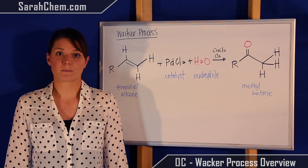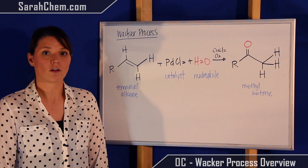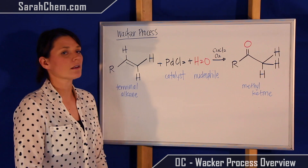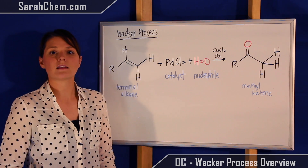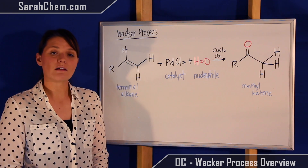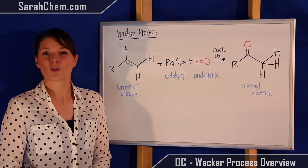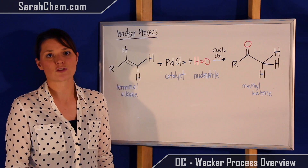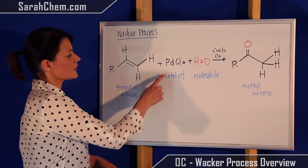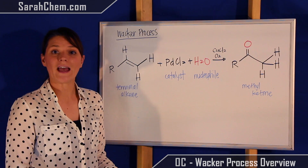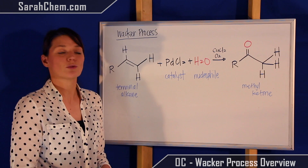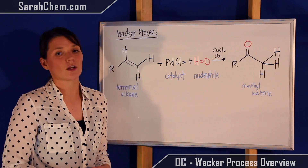First, let's take a look at what's involved in the Wacker process. Over here we have a terminal alkene — remember, a terminal alkene occurs at the end of a chain; internal alkenes do not work very well with this, so you will not very often see internal alkenes used. You also have PdCl₂, which is our catalyst for the reaction, water which will behave as a nucleophile, and then our final product will be a methyl ketone.